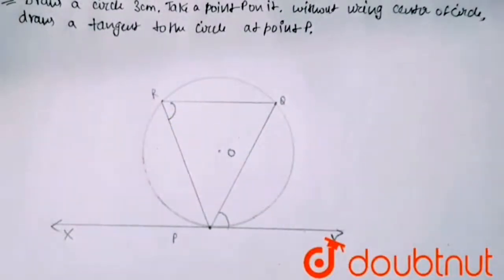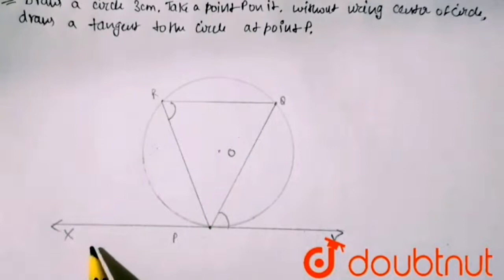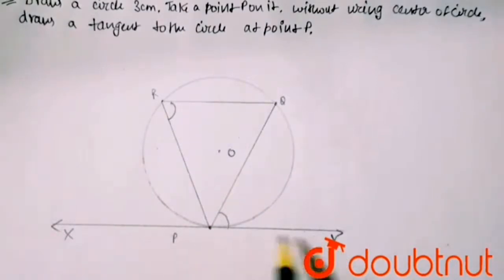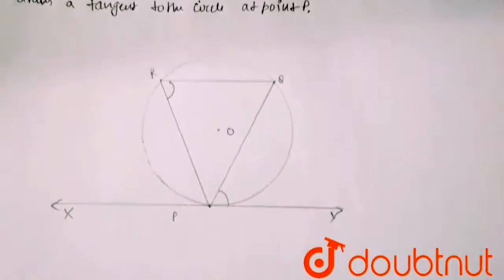Because these are on the opposite side of chord PQ, and they are producing YP to X. This is my tangent, produced YP to X. So to get YPX as the required tangent, that's why we do this. Now I am writing the steps of construction.